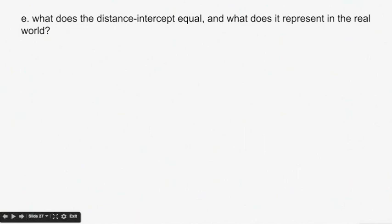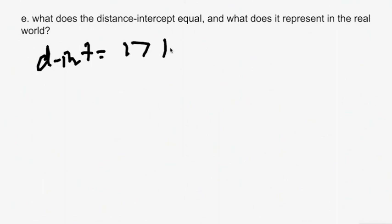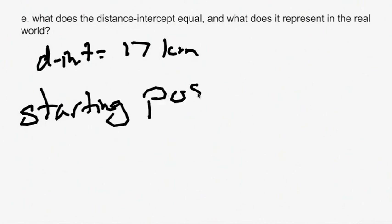Part E: what does the distance intercept equal and what does it represent in the real world? The distance intercept is when time equals 0, so the distance intercept is 17 kilometers. This represents your starting position — how far away from home you were when time was 0, namely the distance between the stadium and your house.